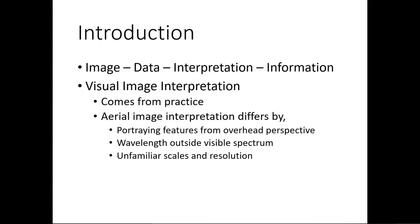So the first difference is that images are portrayed from an overhead perspective. The second is that the wavelength may be outside the visible spectrum. The third is the depiction of the earth's surface at unfamiliar scales and resolutions — you may not be viewing an image at a scale or resolution you are normally used to. Based on all these, aerial photography is very different from what you generally see.